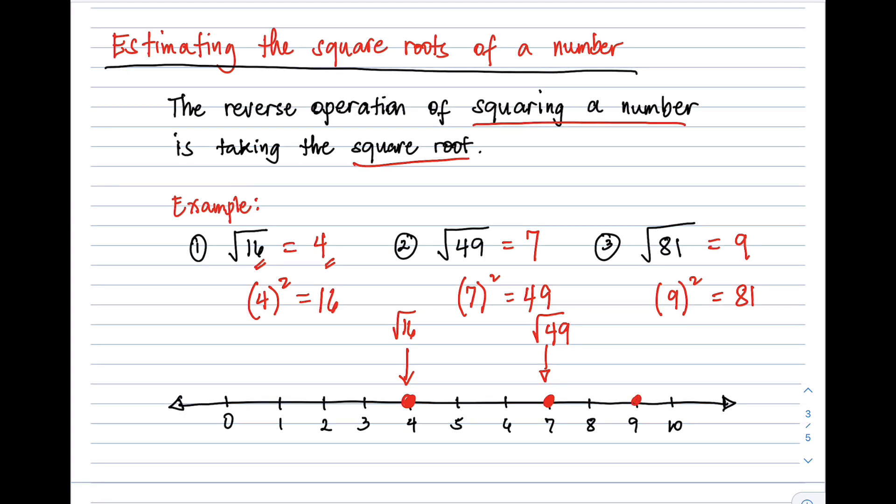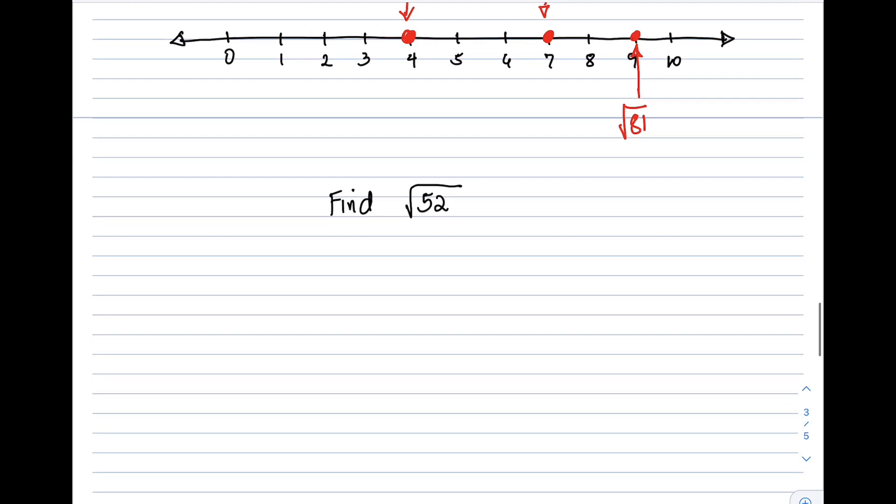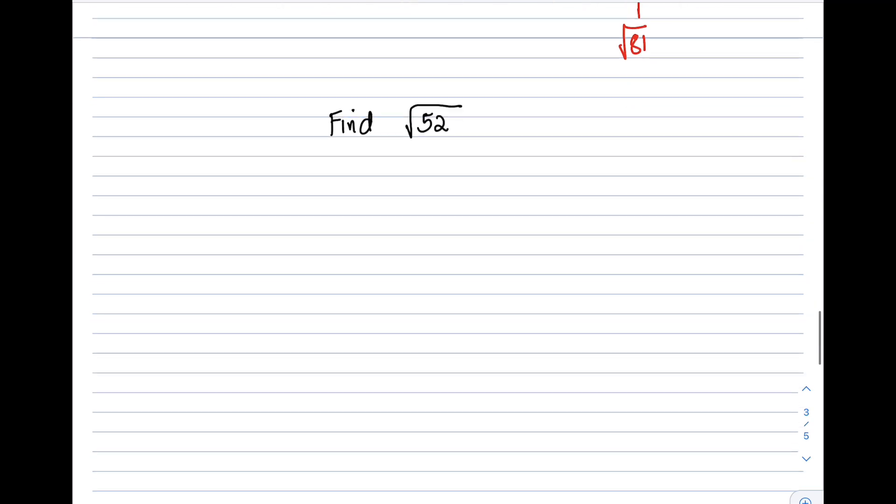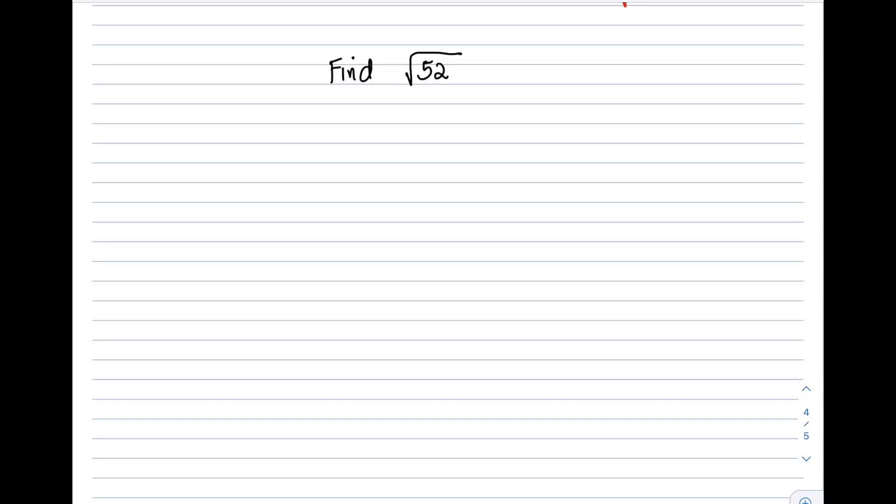You learned in the last video that if the radicand is not a perfect square, you can just estimate the two nearest perfect squares where the given radicand lies. For example, we're asked to find square root of 52. Since 52 is not a perfect square number, we think of 49, which is equivalent to 7 squared, or 7 times 7.